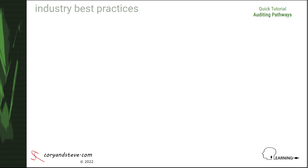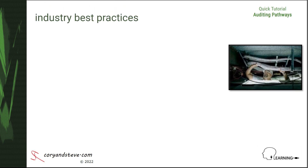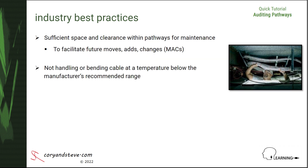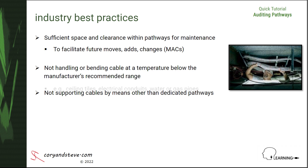We'll conclude this tutorial with a list of industry best practices that should be noted by auditors. First, there should be sufficient space and clearance around and within pathways for any future work. In cold climates, network cable boxes or reels need to be stored in an area that is warm enough to allow subsequent handling without cracking or otherwise damaging the cable jacket during installation in pathways. And all network cables should be supported by pathways installed for that purpose, not placed across suspended ceiling tiles or attached to electrical or plumbing pathways.